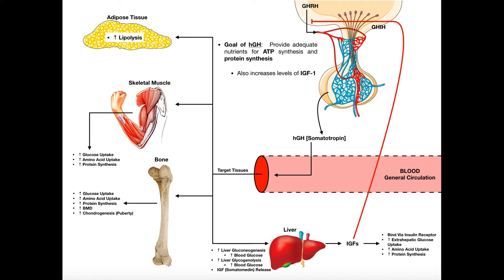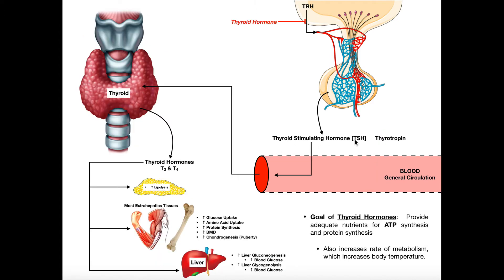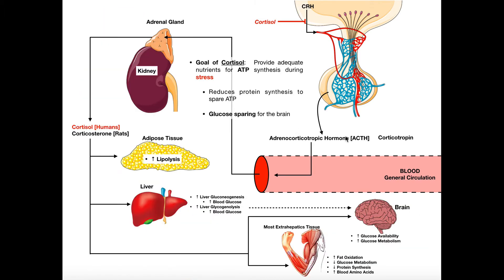If we look at growth hormone, so human growth hormone or somatotropin, yes it has all these effects on adipose and skeletal muscle and bone, but notice it causes the release of another hormone, that is the insulin-like growth factors such as IGF-1. Thyroid-stimulating hormone causes the release of thyroid hormones. Adrenocorticotropic hormone or ACTH or corticotropin, whatever you want to call it, causes the release of cortisol from the adrenal glands.